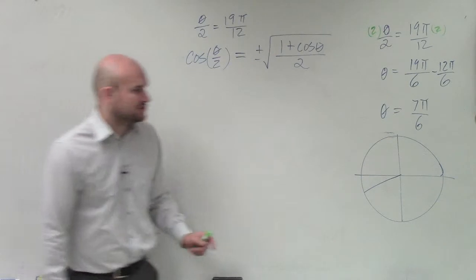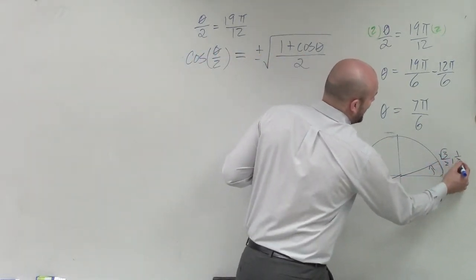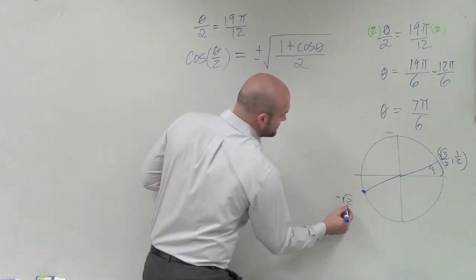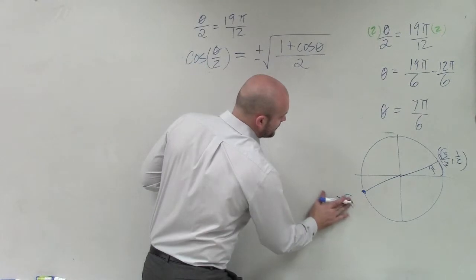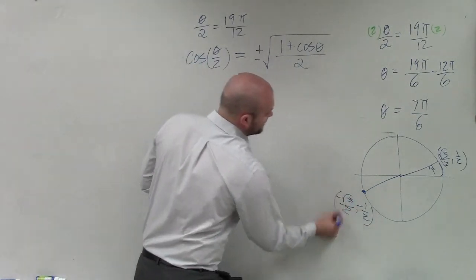7π over 6 is right there when broken up into sixths. Now, the next thing we need to do is determine that if that's π/6, which is square root of 3 over 2 comma one half, then this point is negative square root of 3 over 2 comma negative one half.